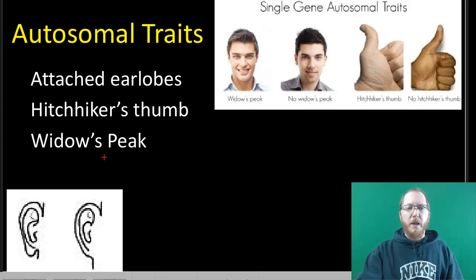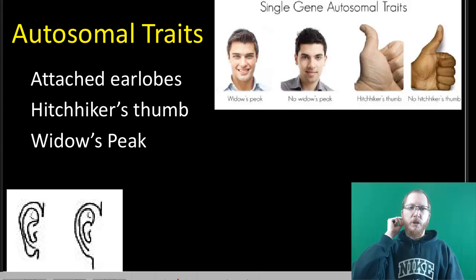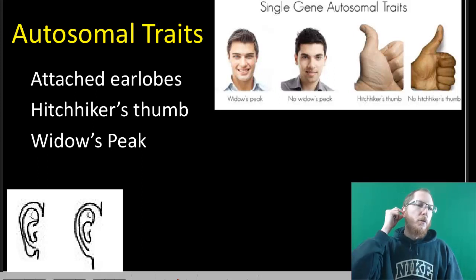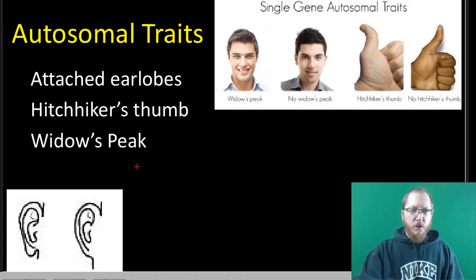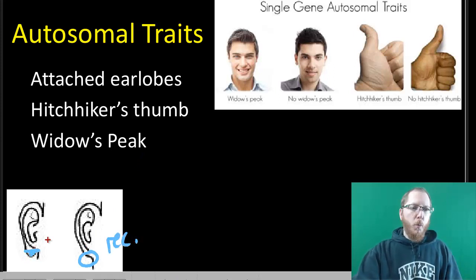There are three traits we'll discuss. The first is attached earlobes. Most people have the dominant trait, which is free earlobes — the earlobe goes down and then comes back up, so there's a flap you can move. With attached earlobes, they come down and attach with no dangly piece. Attached earlobes are the recessive version, while free earlobes are the dominant version.